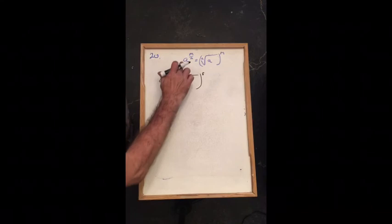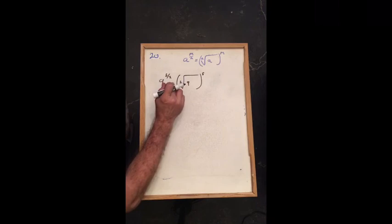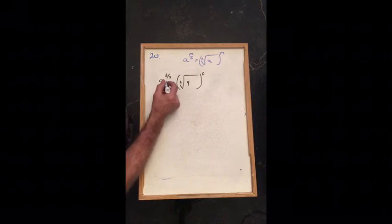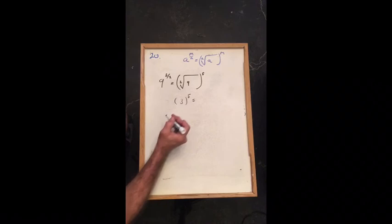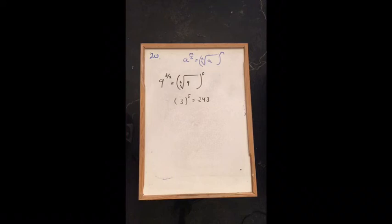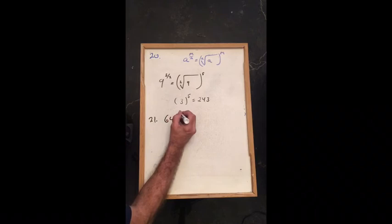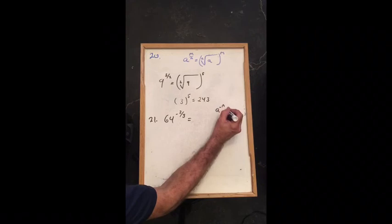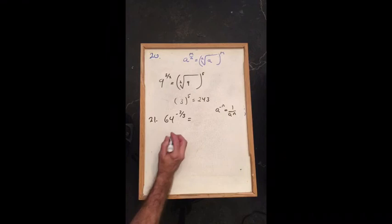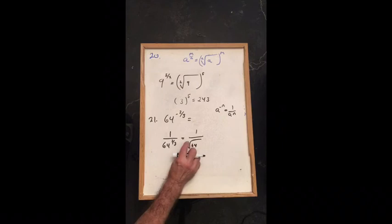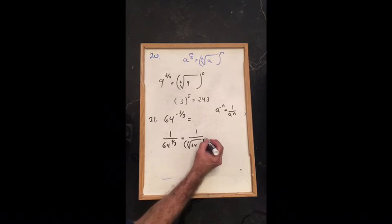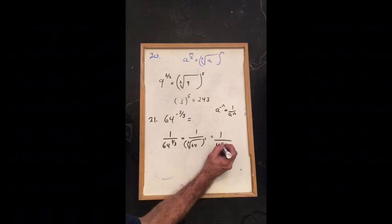For problem 20, we use the rule that a raised to the m over n equals the nth root of a raised to the m — the denominator is the root. For 9 raised to 5 over 2: the square root of 9 is 3, raised to the 5th power gives 243. For problem 21, 64 to the negative 2 thirds: a negative exponent means 1 over 64 to the 2 thirds. The cube root of 64 is 4, and 4 squared is 16, so the answer is 1 over 16.